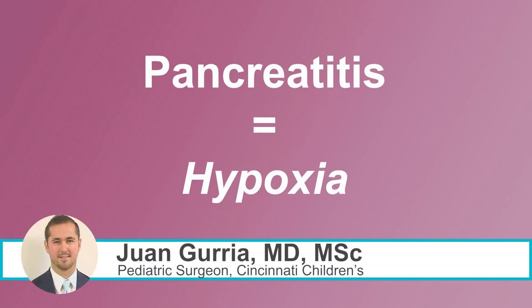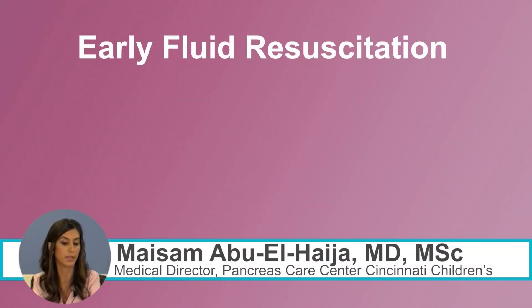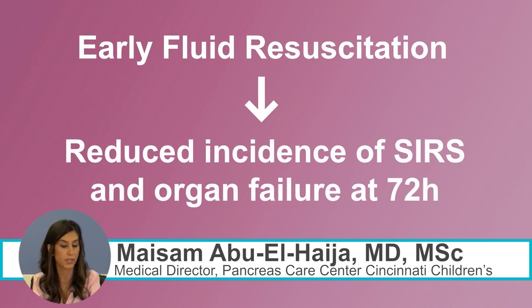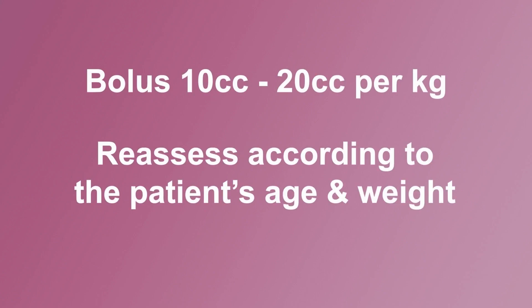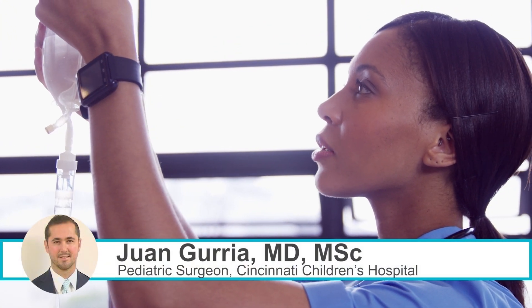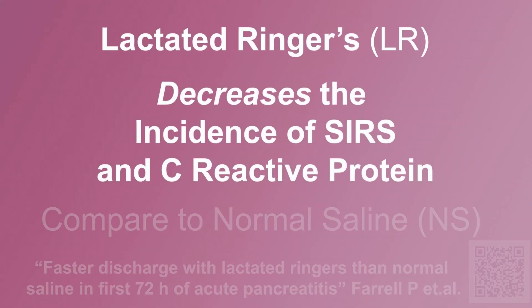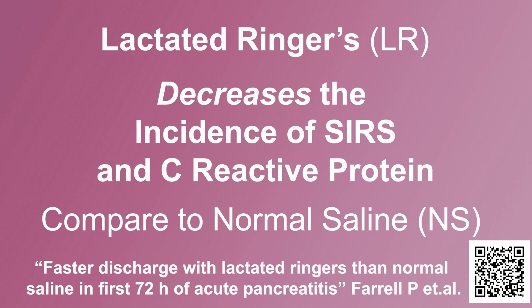Now that we can identify a patient with acute pancreatitis, let's talk about treatment. Remember that pancreatitis is a state of hypoxia. You need to reestablish the intravascular flow to the pancreas to prevent hypoxia, necrosis, atrophic pancreas, and insufficiency. Early fluid resuscitation is associated with reduced incidence of SIRS and organ failure at 72 hours. We should start with 10 to 20 cc per kilo and reassess according to the patient's age and weight. You cannot fluid-overload these lungs too much because the outcomes are worse. LR decreases the incidence of inflammatory response and C-reactive protein at 24 hours compared to NS.